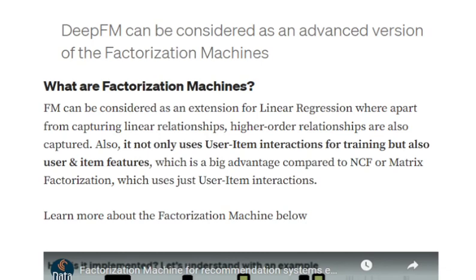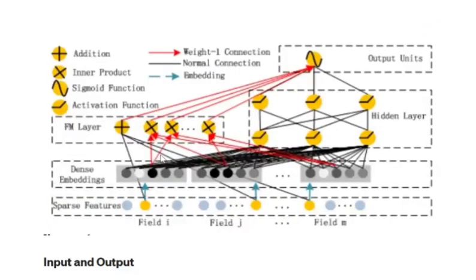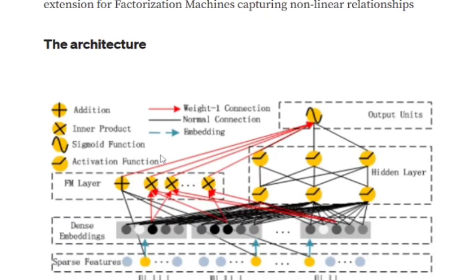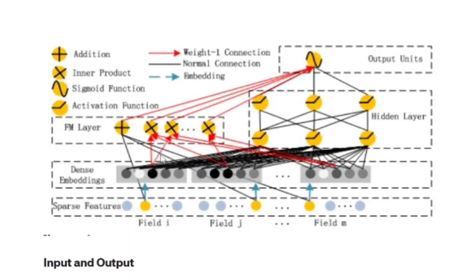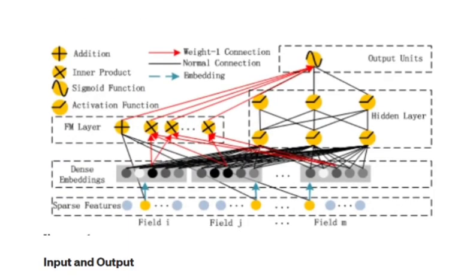To understand more about factorization machines — how they work and what the equation is — you can follow up in a previous video. Now we'll be talking about the architecture of Deep FM. Deep FM is pretty much similar to NCF. NCF is an extension of collaborative filtering and matrix factorization; similarly, Deep FM is an extension of factorization machines. We start with all the features: assume we have feature fields — field 1, field i, field j, through field m.